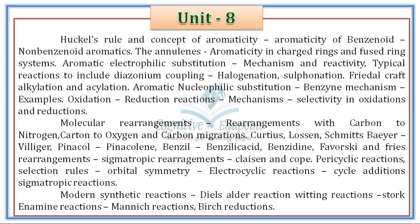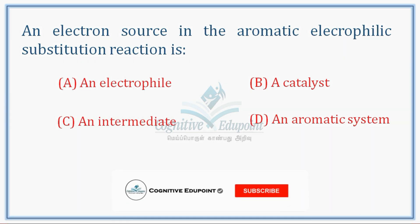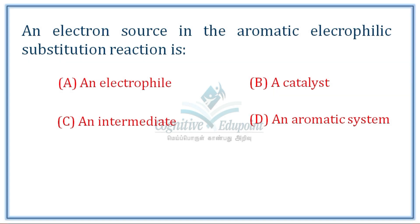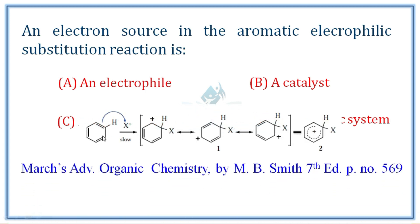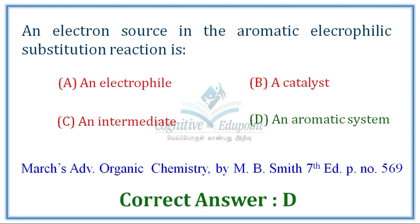First question — this is a basic and simple question, easy to answer from common organic chemistry books. An electron source in the aromatic electrophilic substitution reaction is? In electrophilic substitution, an electrophile attacks an aromatic substrate. The electron source is the pi electrons of the aromatic system. The electrophile attacks, a sigma complex forms, which gives the substituted product. Correct answer: the aromatic system's pi electrons.